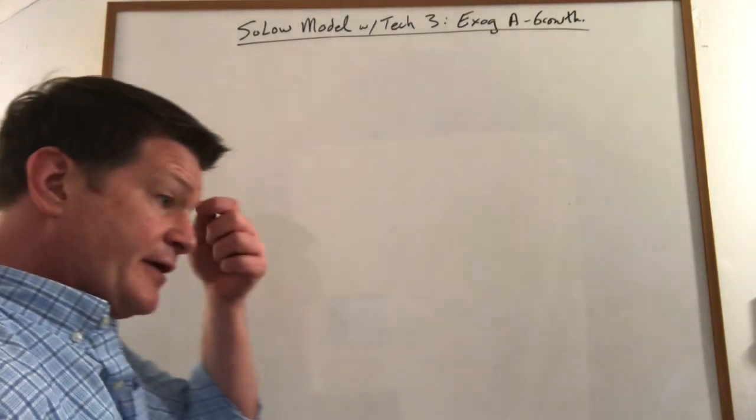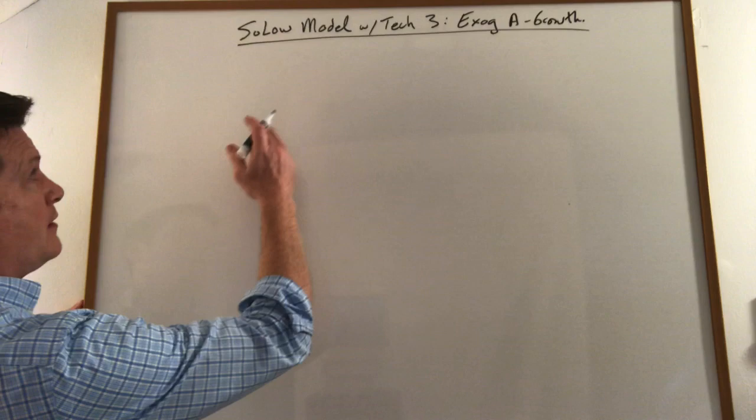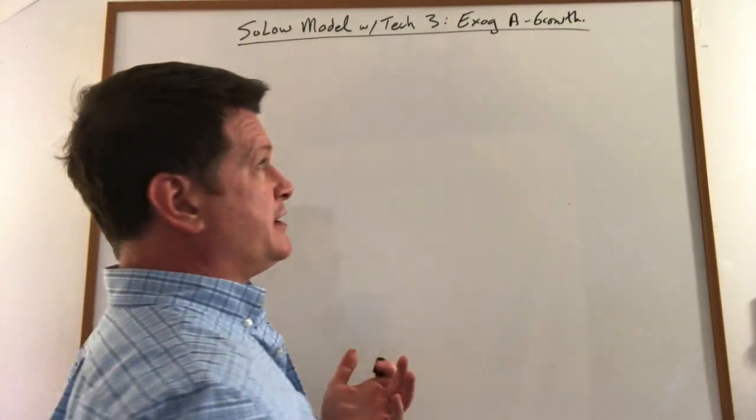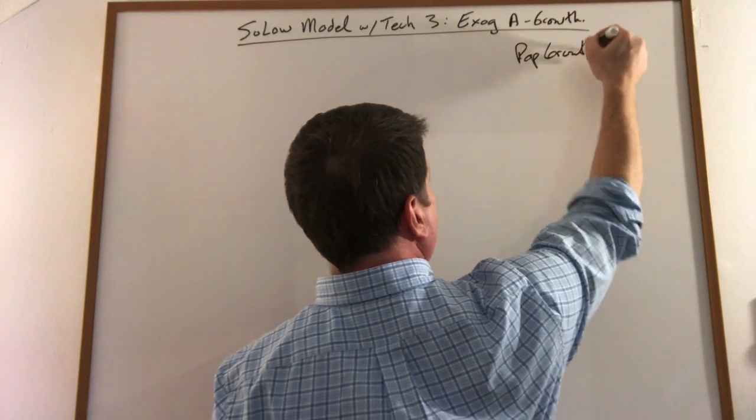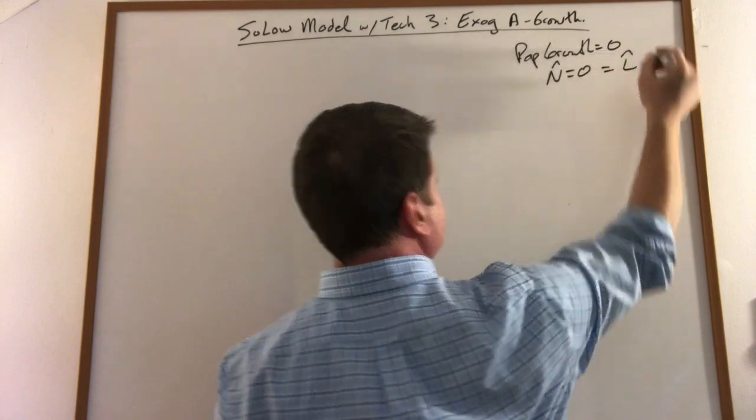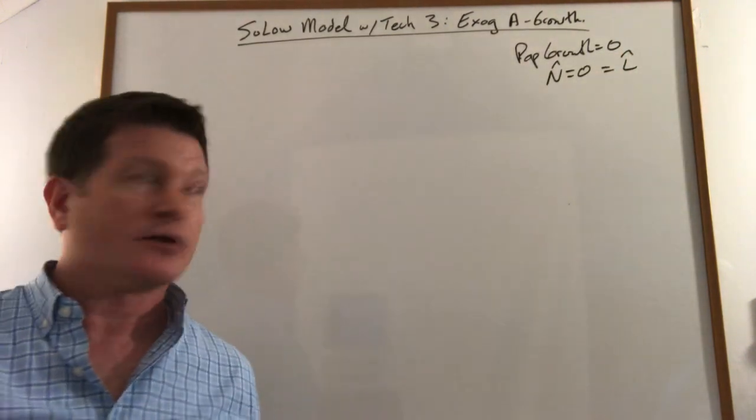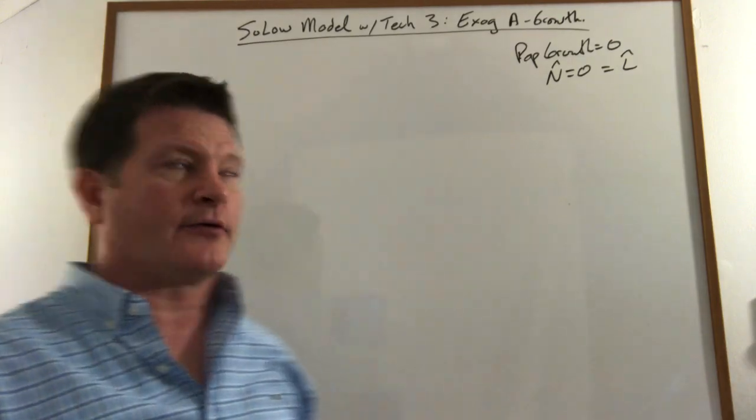It turns out pretty simply. So first of all, we could have population growth, but let's just assume that population growth is zero. So N hat is zero, which means L hat is zero. So population is growing at zero rate, so your labor force is growing at zero rate, too.